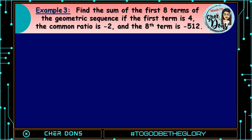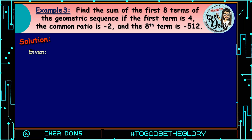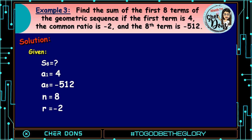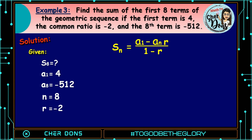Example number 3. Find the sum of the first 8 terms of the geometric sequence if the first term is 4, the common ratio is negative 2, and the 8th term is negative 512. Solution. Given: we're looking for S sub 8. A sub 1 is 4, a sub 8 is negative 512, n is 8, and r is negative 2. Applying the formula, S of n is equal to a sub 1 minus a sub n multiplied by r, all over 1 minus r. We're using this formula because the last term is given.